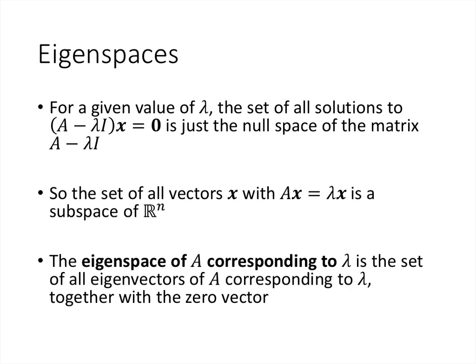Now if we take all of the solutions to the matrix equation A minus lambda I times x equals 0, remember that's just the null space of the matrix A minus lambda I — all of the vectors that when we take that matrix and multiply by that vector, we get 0. The set of all vectors that solve Ax equals lambda x is a subspace of R^n. The eigenspace of A corresponding to lambda is that set of all solutions to that matrix equation — that's also the set of all eigenvectors together with the zero vector. By definition, an eigenvector is a non-zero vector, because A times the zero vector is always just the zero vector.